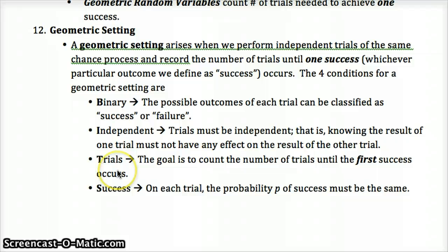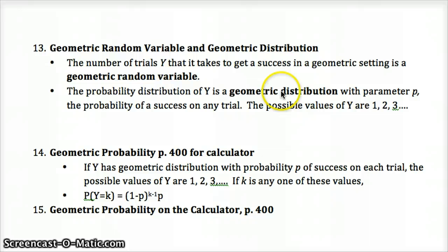The T, bits, for geometric setting is what you have to remember to check. Success has to be, the probability has to be the same. So same as binary, except for now, instead of counting the number of successes in a fixed number of trials, we're counting the number of times it takes to get one success. So possible values of Y are 1, 2, 3. You have to be whole numbers. It's discrete. It's the number of trials to one success.